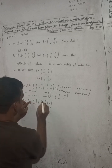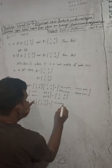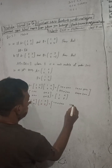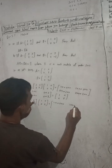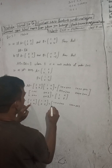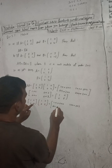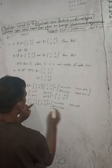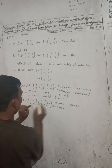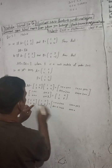First row with second column: 1 into 0 plus 0 into 2. Second row with first column: 0 into 1 plus 4 into 0. For second row and second column: 0 into 0 plus 4 into 2.